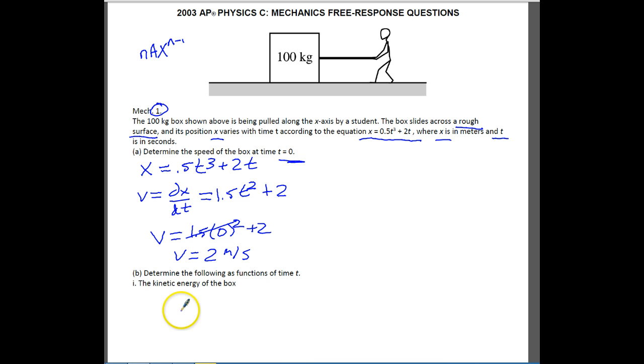The next part of the problem, they want us to find the kinetic energy of the box as the function of time t. So I'm not sure why they put functions, but it's the first typo I've seen. K equals 1/2 m v squared. And we can't use v here. So instead, we've got to plug in the values that they've given us. So K equals 1/2. And then we have the mass, which is 100.